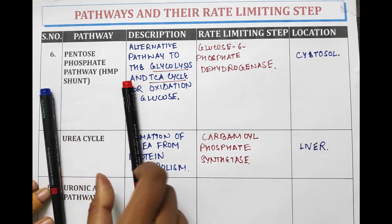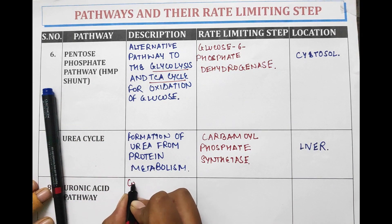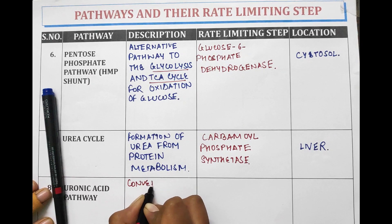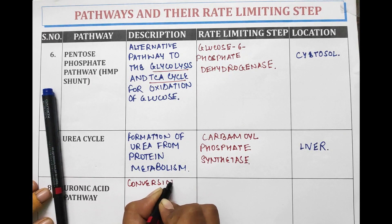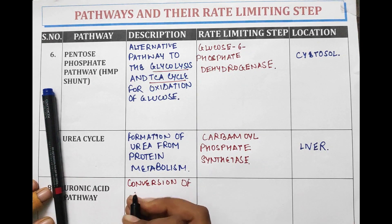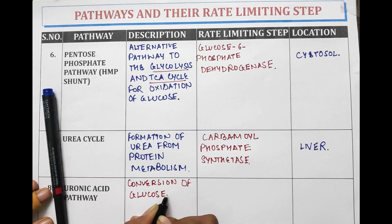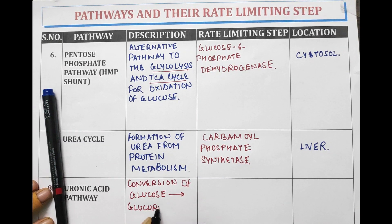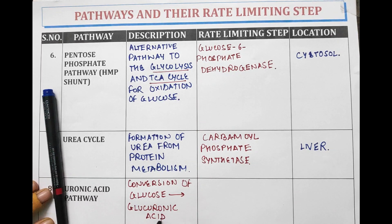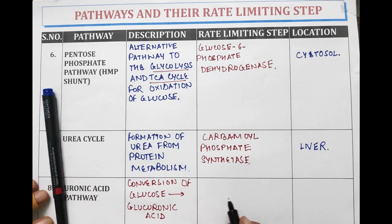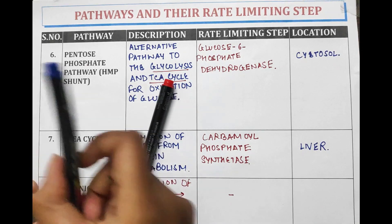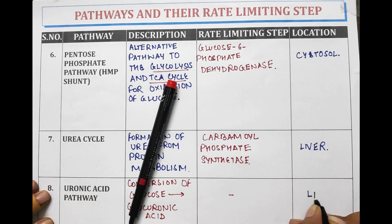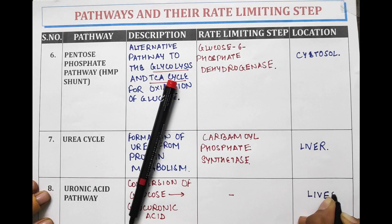Uronic acid pathway: it is the process of conversion of glucose into glucuronic acid. There is no rate limiting step, and the location of the uronic acid pathway is the liver.